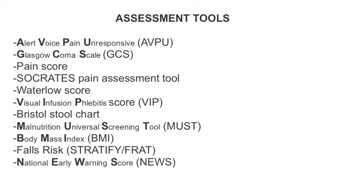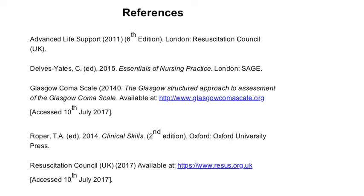To calculate any risk of falls, you can use Stratify or FRAT. All of your observations should be accurately recorded and a National Early Warning Score, or NEWS score, calculated. The appropriate guidance and management should then be sought depending on this score. We hope you found this video on the ABCDE Assessment Framework useful. Please utilise the references to find out more and to help consolidate your learning. Thank you.